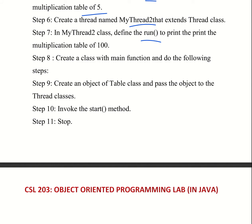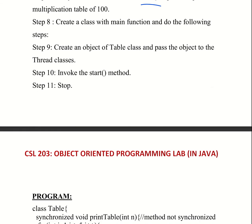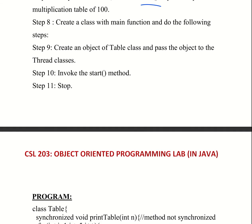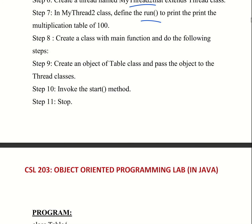So in myThread1 we print the multiplication table of 5, and in myThread2 we print the multiplication table of 100. Then create a class with a main function. Create an object of the Table class and pass the object to the Thread class. We use thread synchronization to implement the thread, then invoke the start method.